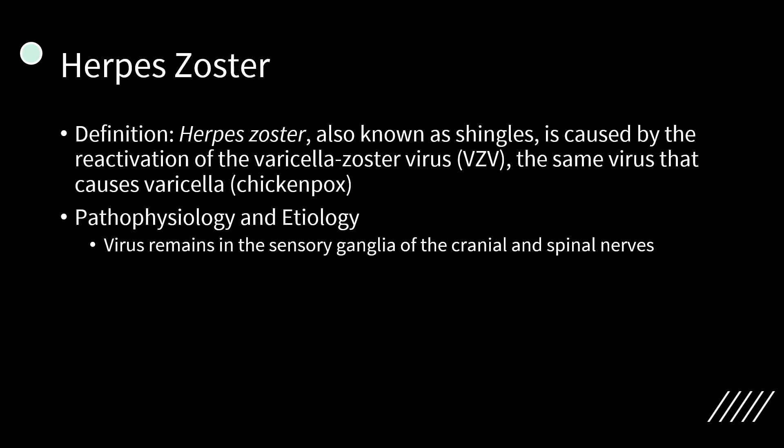Herpes zoster is an infection of the varicella zoster virus, or chickenpox virus. It can affect the ophthalmic division of the trigeminal nerve and occurs more frequently in elderly, debilitated, stressed, or immunosuppressed individuals. The virus remains latent in the sensory ganglia of cranial and spinal nerves, and upon reactivation causes symptoms to develop. Virions shed from neuronal cell bodies are carried down the nerve to the skin, causing local inflammation and blistering. This typically occurs unilaterally, and dermatologic involvement follows a dermatome.